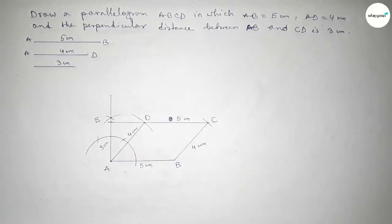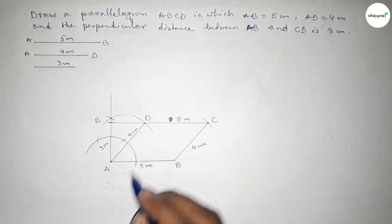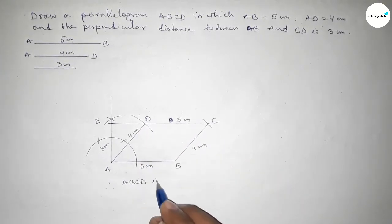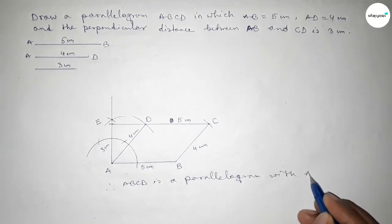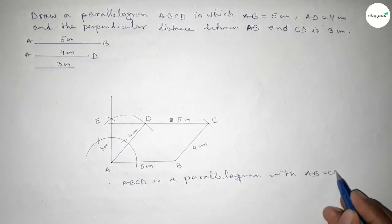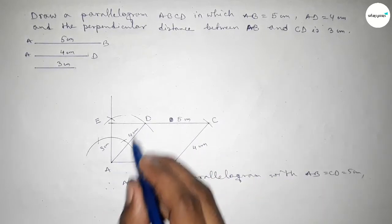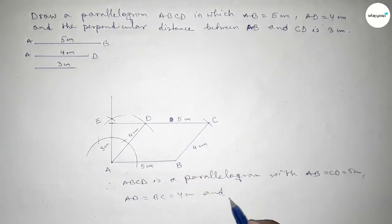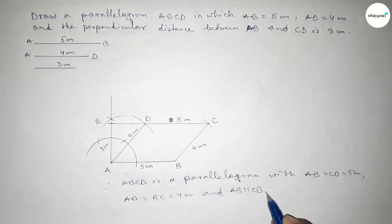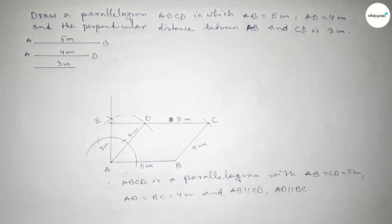Therefore in the parallelogram ABCD: AB equals CD equals 5 centimeter, and AD equals BC equals 4 centimeter. AB is parallel to CD and AD is parallel to BC. That's all, thanks for watching — please share it with your friends.